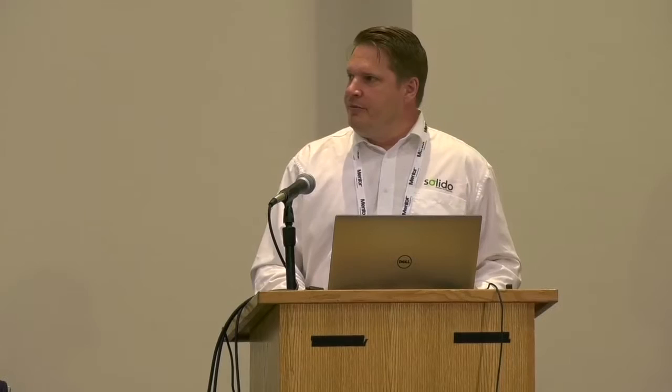Solido has been at this for 12 years; I was there for 11 of those. We've implemented these solutions into two product lines. The first is Variation Designer — a production tool that uses many different machine learning techniques. People come to Solido because our solutions are 10, 100, or 1,000 times faster but still accurate and provable — you can still make engineering decisions based on the results. The second is the Machine Learning Characterization Suite, announced this year, applying our toolbox to library timing characterization, speeding up that process by weeks for standard cell memory I/O problems.